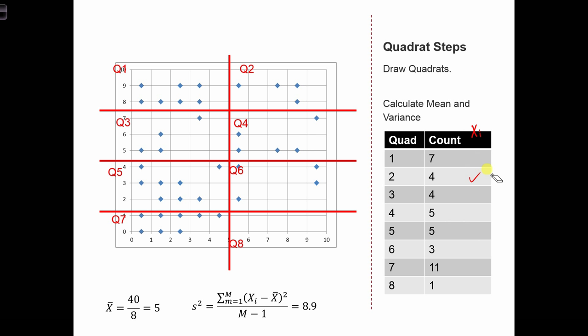Now we need to calculate the mean and variance of this xi. So we have 40 as the total number of points, so the mean is just 40 over 8, which equals 5. And the variance, when we calculate it out, is 8.9.